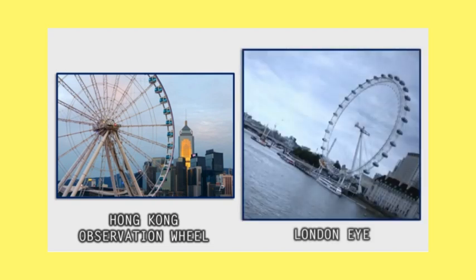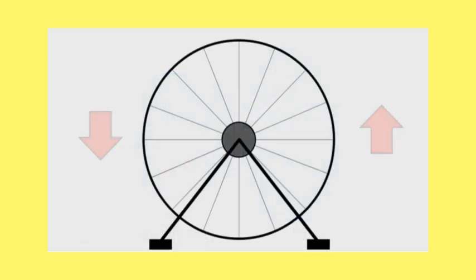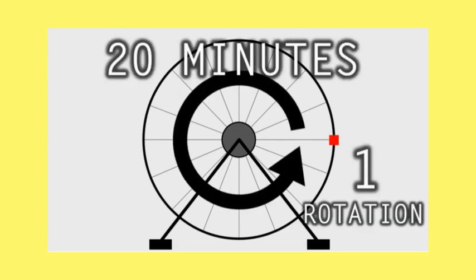To begin, let's consider the Hong Kong Observation Wheel to understand a sine wave, or the London Eye, or any other ferris or giant wheel. They're all circular. Let's assume it rotates counterclockwise, and you're taking a ride on it. There you are, as a red square, and it takes about 20 minutes to complete one rotation. If you track the motion, you'll just go around in a circle and end up at the starting position in 20 minutes.